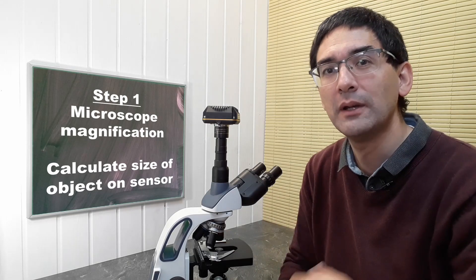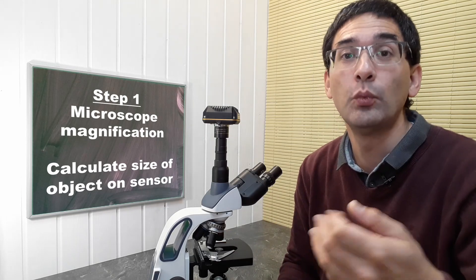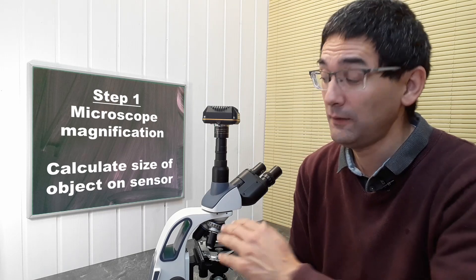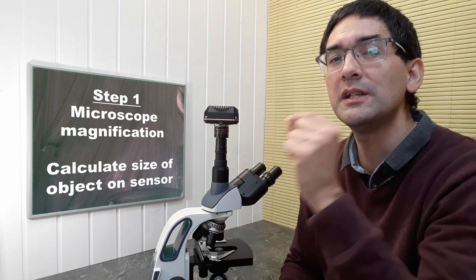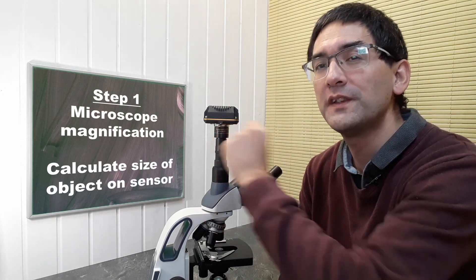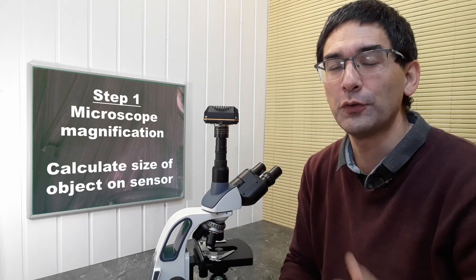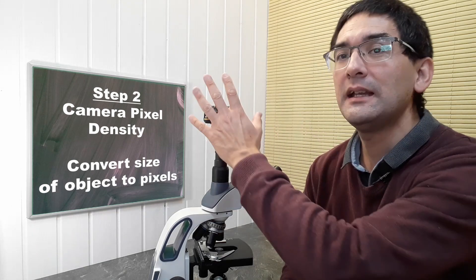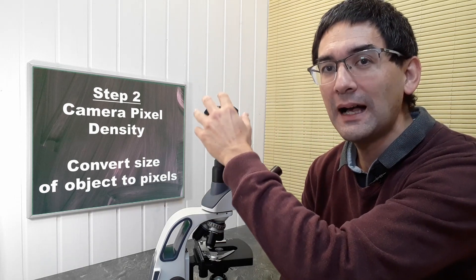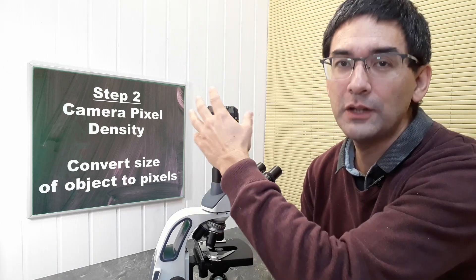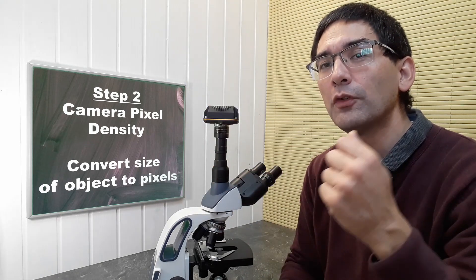Let's say bacteria have a size of approximately one micrometer. If this optical system projects the image on the sensor, how many micrometers is the image going to be large on the sensor? This is going to be the first calculation.